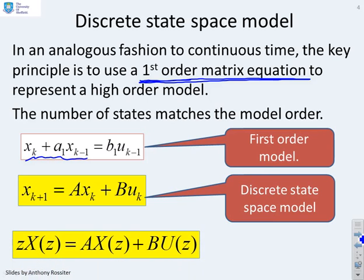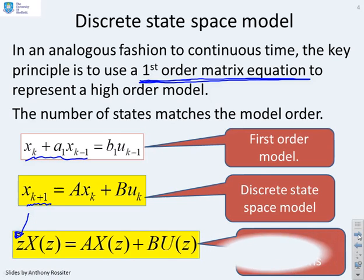If you take Z transforms of that discrete state-space model, a shift in time of one sample forward corresponds to multiplication by Z. So x(k+1) becomes Z·x, A·x(k) becomes A·x, and B·u(k) becomes B·u. The transforms for this discrete model are therefore easy to write down.